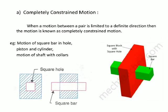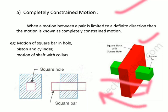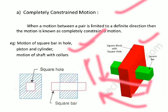Completely constrained motion is when the motion between a pair is limited to a definite direction regardless of the direction of the applied force. For example, a square block in a square hole can only move forward or backward — it cannot rotate. Similarly, a piston in a cylinder and a shaft with a collar are examples of completely constrained motion.